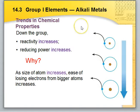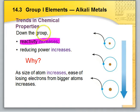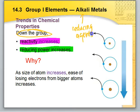Looking at chemical properties as you go down the group, reactivity increases going down the group. The next point is reducing power — alkali metals are reducing agents. As you go down the group, their reducing power increases and their reactivity increases.